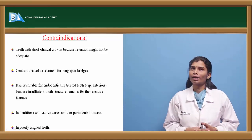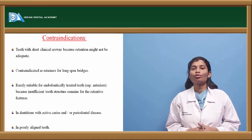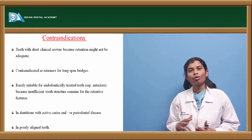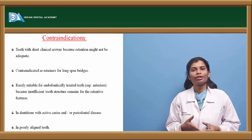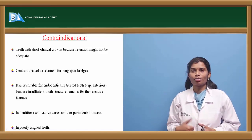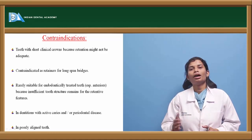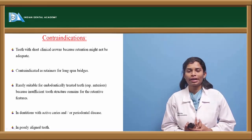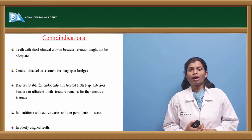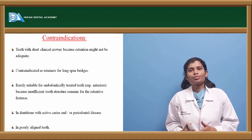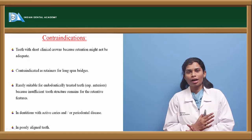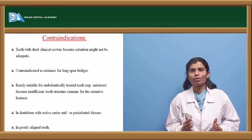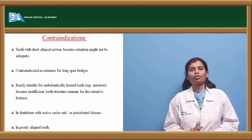In dentitions with active caries or periodontal disease, treat those conditions first before treatment planning. In cases of active caries, partial veneer crowns risk secondary caries development in uncovered areas and are not indicated. In poorly aligned teeth, forces are angular rather than vertical, and partial veneer crowns won't help correct the alignment.